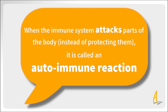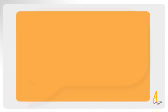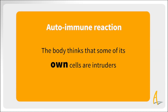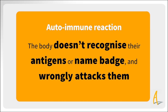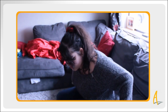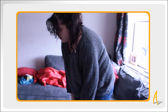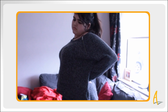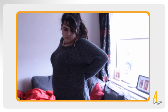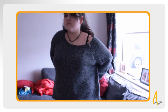In an autoimmune reaction, the body thinks that some of its own cells are intruders, because for some reason it doesn't recognise their antigens or name badge, and wrongly attacks them. In certain types of arthritis, including psoriatic arthritis, an autoimmune reaction occurs mainly in the joints, so that they become red and swollen or inflamed. This inflammation is what causes the damage.